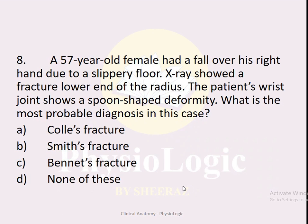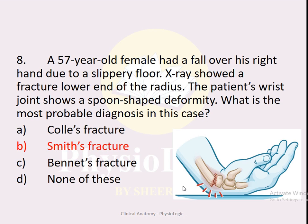MCQ number eight: A 57-year-old female had a fall on her right hand on a slippery floor. X-ray showed fracture of the lower end of the radius, and the wrist shows a spoon-shaped deformity. Options: A — Colles' fracture, B — Smith's fracture, C — Bennett's fracture, D — none of these. The correct option is B — Smith's fracture, which results from a fall on a bent/flexed wrist and shows a spoon-shaped deformity, as opposed to Colles' fracture which shows a dinner fork deformity.